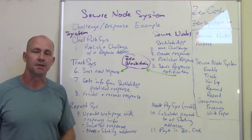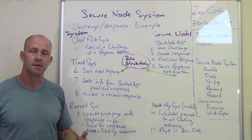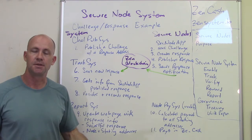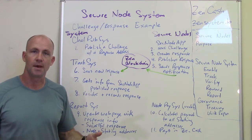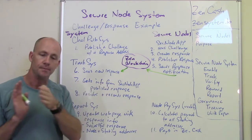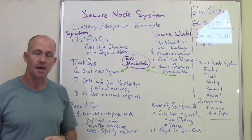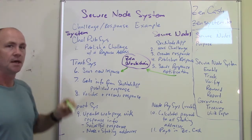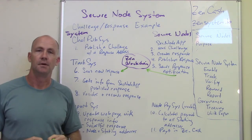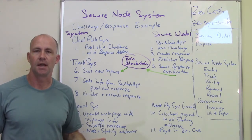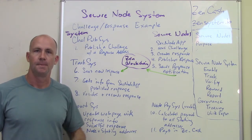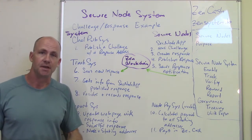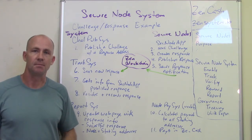First of all, the challenge publishing system — ChalPubSyst — publishes a challenge. We're going to start out by doing this once a day. It publishes a challenge on a port in a JSON format, which is just the name of the item and then the value of the item. In that challenge, it's going to include a transaction number that's somewhere in the ZenCash blockchain, the challenge sequence number, and then a shielded address — a Z address — that the response needs to be sent back to.